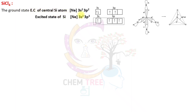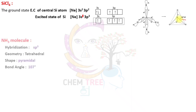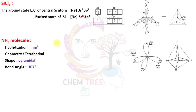Another example is silicon tetrachloride (SiCl₄). Silicon is the central atom with electronic configuration [Ne] 3s², 3p². The 3s² electron is excited to the 3p orbital, and these intermix to form four SP³ hybrid orbitals, which overlap with four chlorine atoms forming four Si–Cl bonds with tetrahedral geometry and bond angle 109°28'.